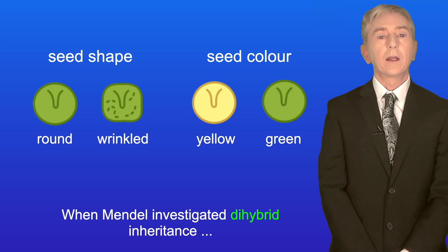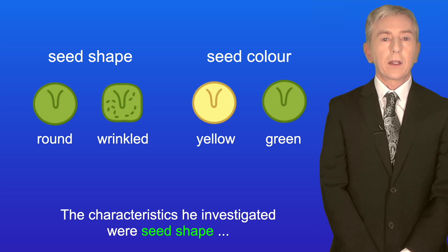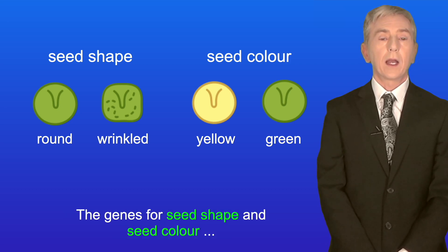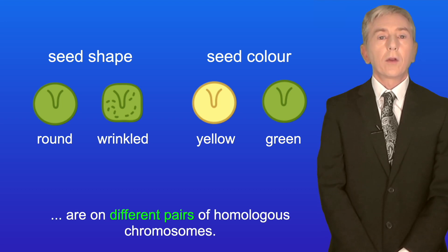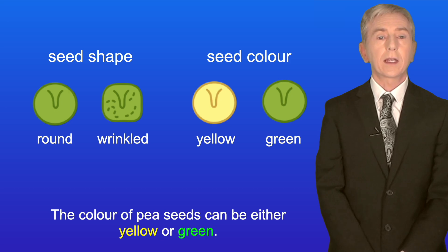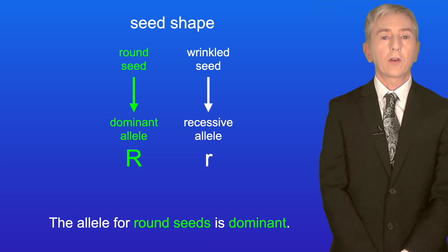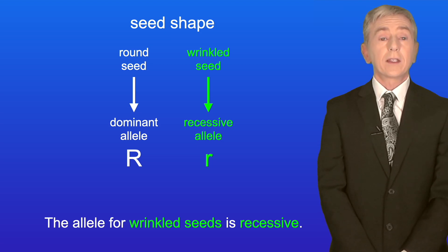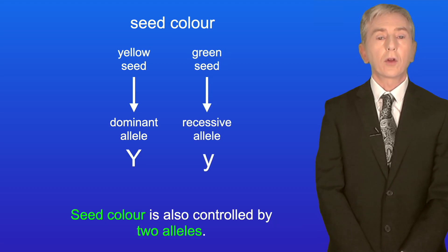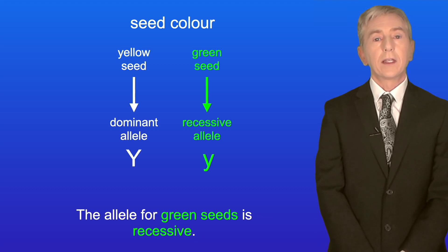When Mendel investigated dihybrid inheritance he looked at pea plants. The characteristics he investigated were seed shape and seed color, and the genes for seed shape and seed color are on different pairs of homologous chromosomes. The shape of pea seeds can be either round or wrinkled, and the color can be either yellow or green. Seed shape is controlled by two alleles — the allele for round seeds is dominant and the allele for wrinkled seeds is recessive. Seed color is also controlled by two alleles — the allele for yellow seeds is dominant and the allele for green seeds is recessive.